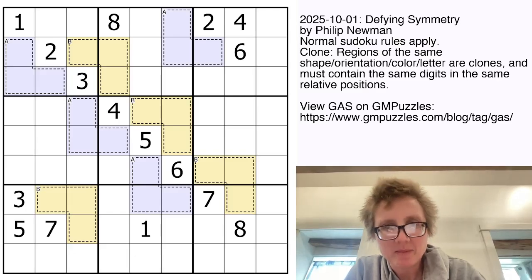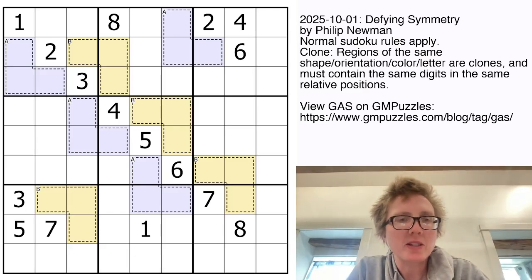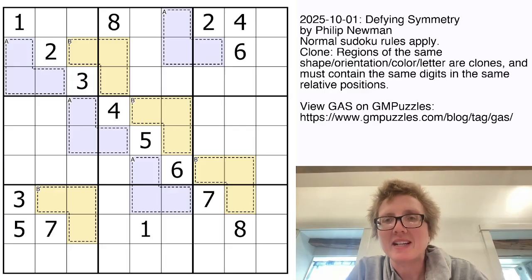Good morning, my friends. I'm Clover, and this is Genuinely Approachable Sudoku. Today's puzzle is called Defying Symmetry by Philip Newman, and it is a clone sudoku.